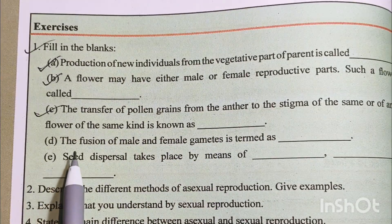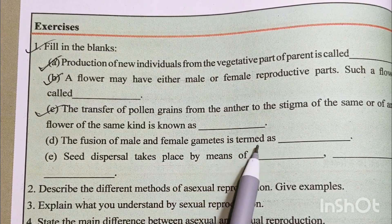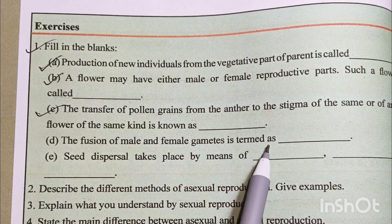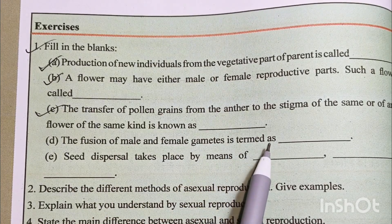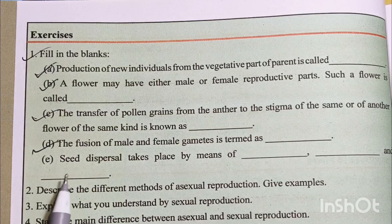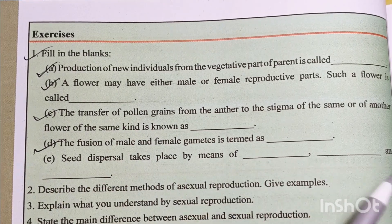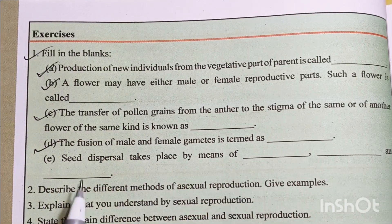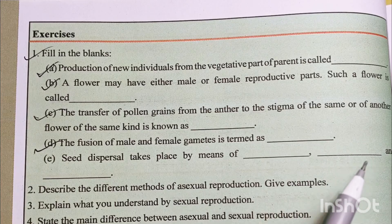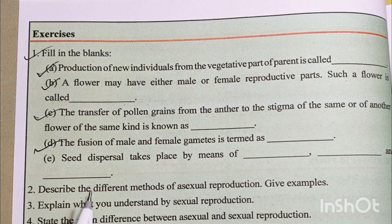Number D: the fusion of male and female gametes is termed as fertilization. Number E: seed dispersal takes place by means of wind, water and animals.